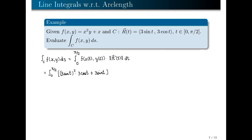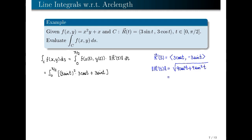To get |r'(t)|, we first compute r'(t) by taking the derivative of each component. The derivative of the x-component is 3 cos t, while the derivative of the y-component is −3 sin t. Thus, the magnitude of r'(t) equals the square root of (3 cos t)² + (−3 sin t)² = √(9 cos²t + 9 sin²t) = √9 = 3. Substituting |r'(t)| = 3, the line integral is now expressed as a single integral with respect to t.